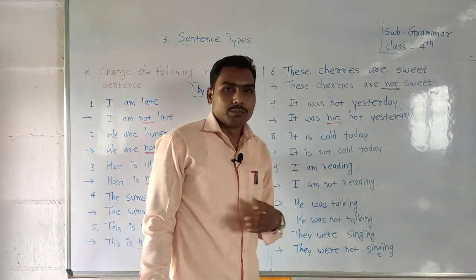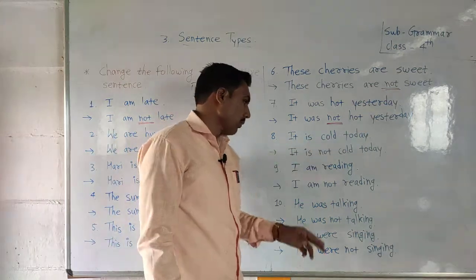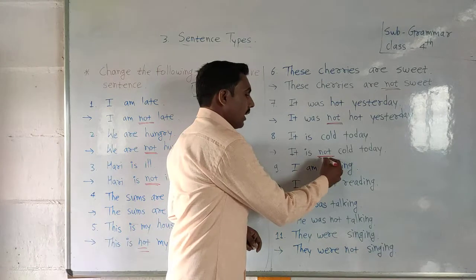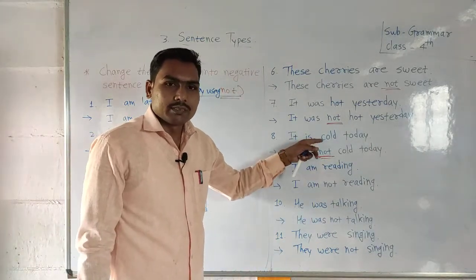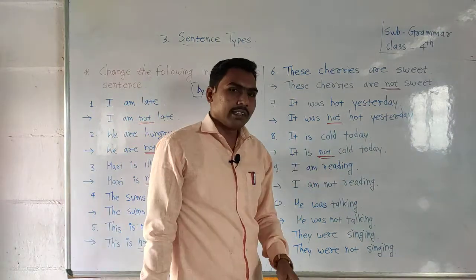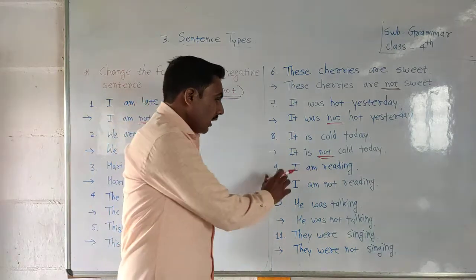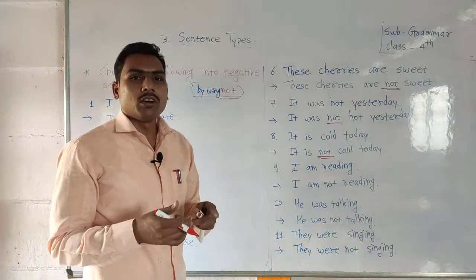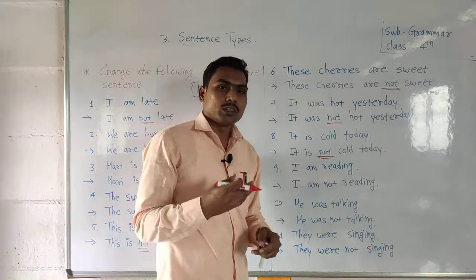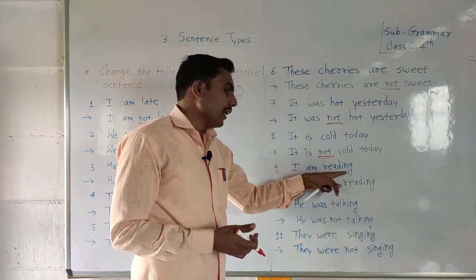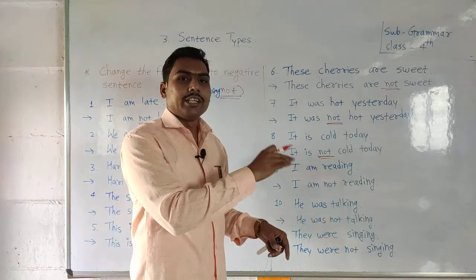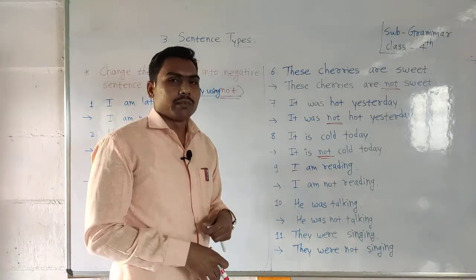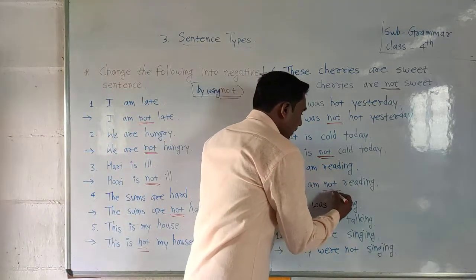Now example number eight: 'It is cold today.' The negative sentence is: 'It is not cold today.' Next example: 'I am reading.' The process is ongoing — present continuous. We convert it into negative: 'I am not reading.' We attach only 'not.'